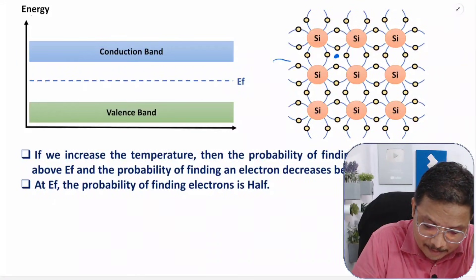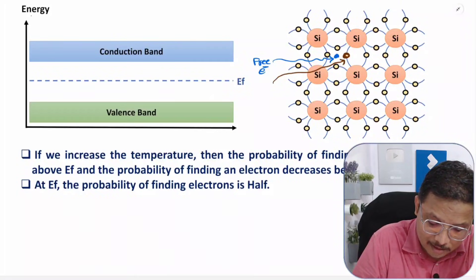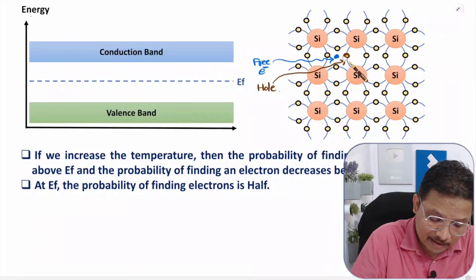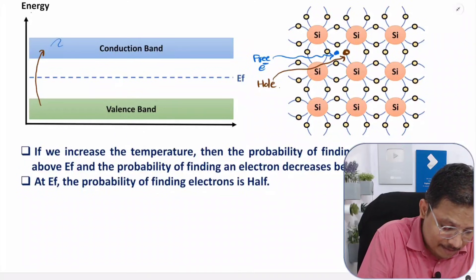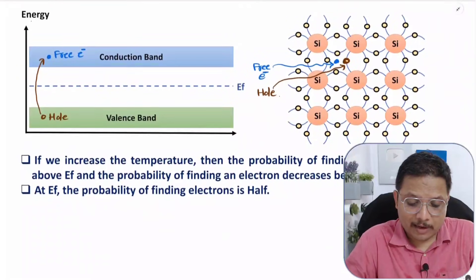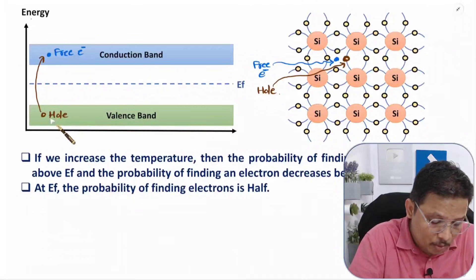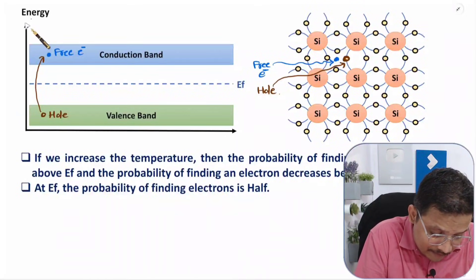When an electron becomes free, a hole is created in its place. In the energy band diagram, the free electron moves from the valence band into the conduction band, leaving behind a hole. At higher temperatures, more electrons from the valence band move towards the conduction band.